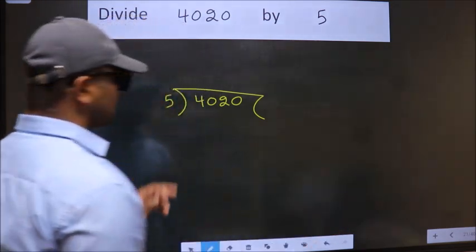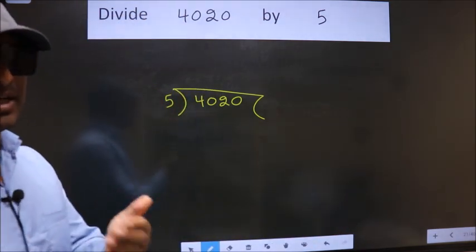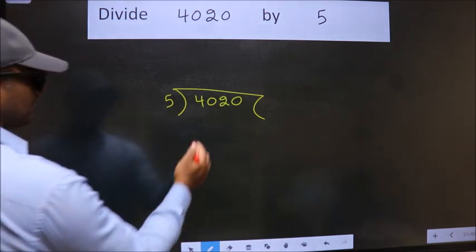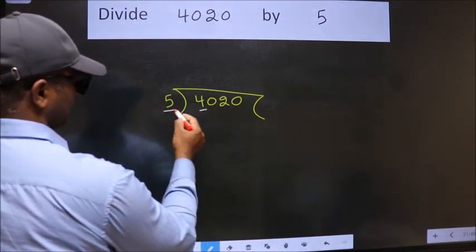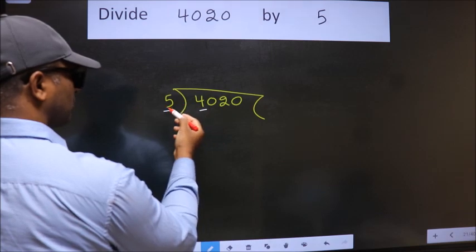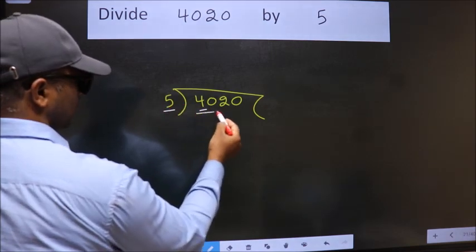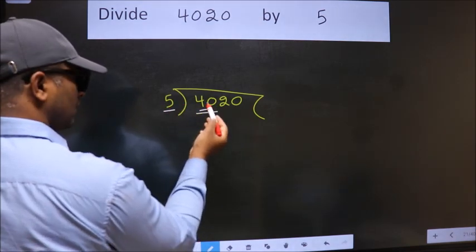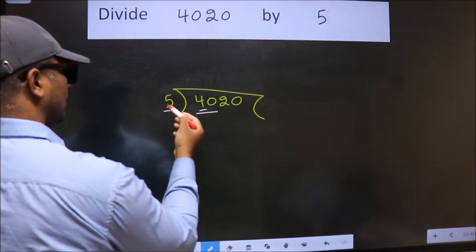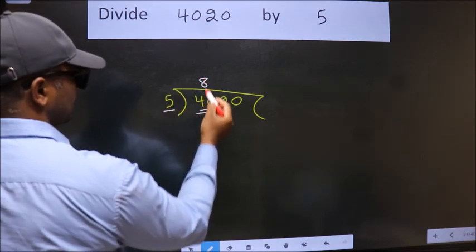This is your step 1. Next, here we have 4. Here 5. 4 is smaller than 5. So we should take two numbers, 40. When do we get 40? In 5 table, 5 eights 40.